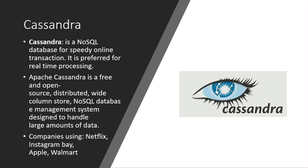Now let's move on to Cassandra. This is again an open source NoSQL database designed for speedy online transactions. It came out in 2008 and was launched by Apache. It shares several features with Kafka — it is open source, distributed, and uses a NoSQL database management system capable of handling large amounts of data. There are very few differences between these softwares overall.